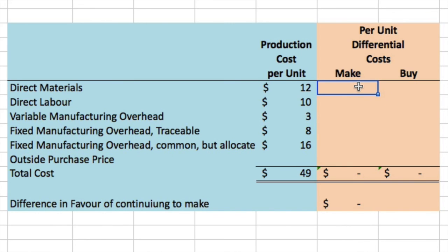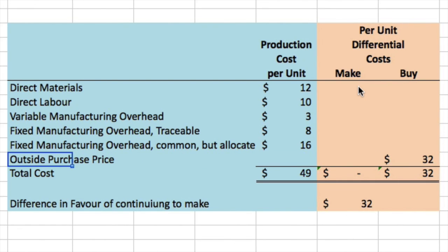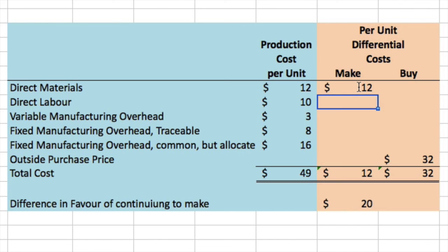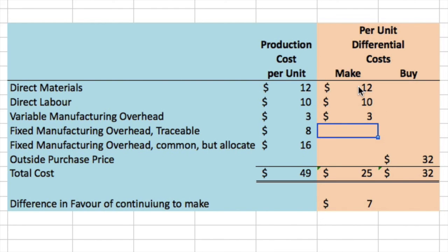Assuming the company has no alternative use for the facilities, should the outside supplier's offer be accepted? We put in the $32 outside purchase price. What we're looking for are relevant costs — costs we wouldn't incur going forward. Would we incur direct materials if we buy from outside? No, so it's irrelevant. Direct labor and variable manufacturing overhead — if we make, yes, we incur those.